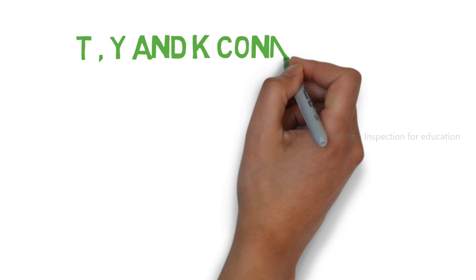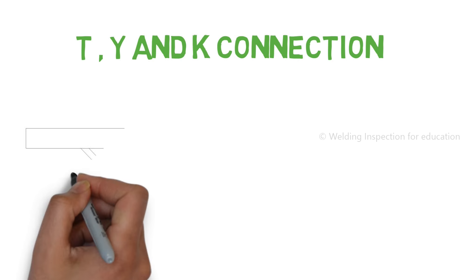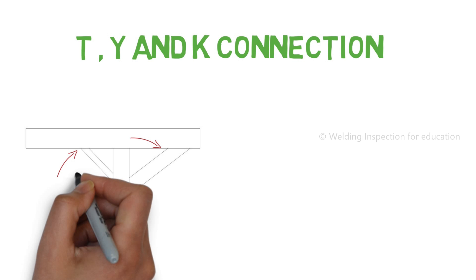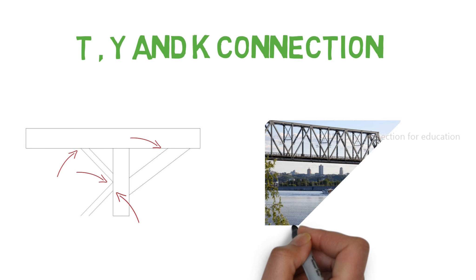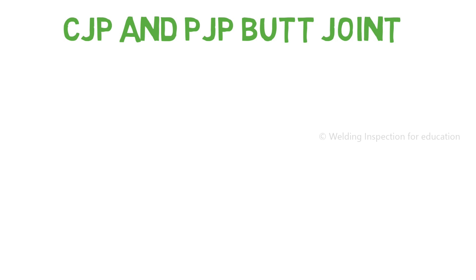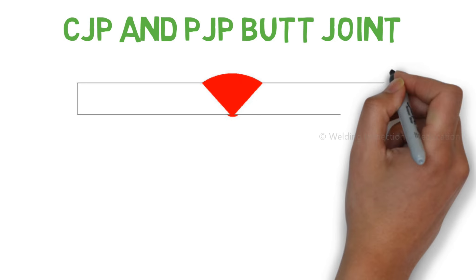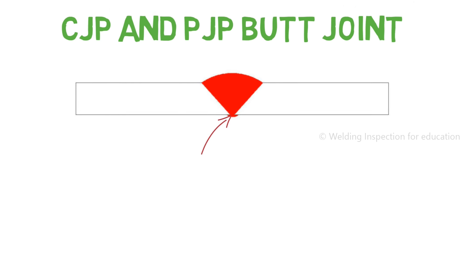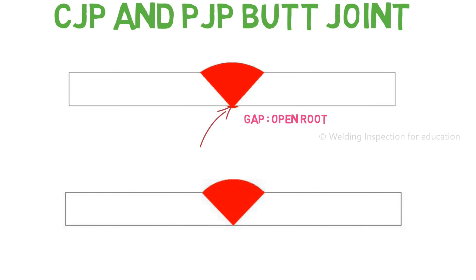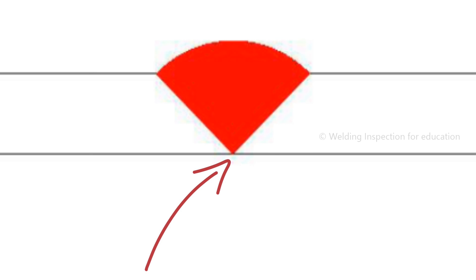Now let's learn some useful terms. First, T, Y, and K connections: as shown in the figure, some members are making T, Y, or K connections — they are part of a corner joint or T joint, mostly used in truss or structural frame connections. Second, CJP and PJP butt joints: CJP means complete joint penetration and PJP means partial joint penetration. When two metals in a butt joint are not touching each other, it is called complete joint penetration (CJP). When two metals are touching each other, it makes a partial joint connection, called a PJP joint.